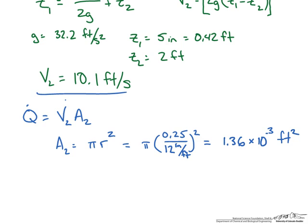Now we take this and multiply it by the velocity. And we get a volumetric flow rate of coffee of about one point four times ten to the minus two feet cubed per second.